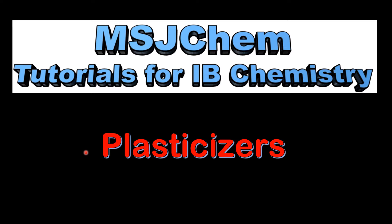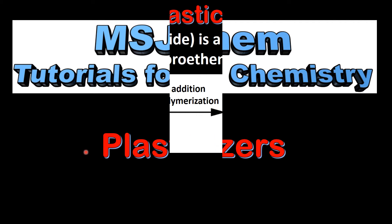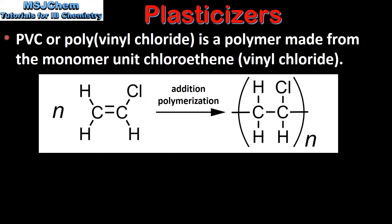This is MSJChem. In this video I'll be looking at plasticizers. We'll start by looking at the formation of PVC, which is an addition polymer. PVC, or polyvinyl chloride, is a polymer made from the monomer unit chloroethene, which is also known as vinyl chloride.